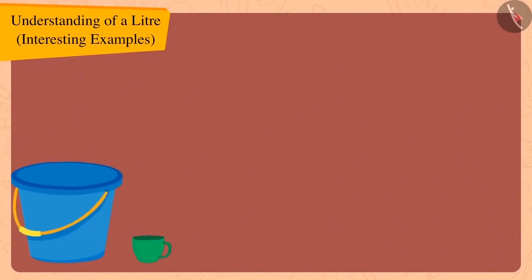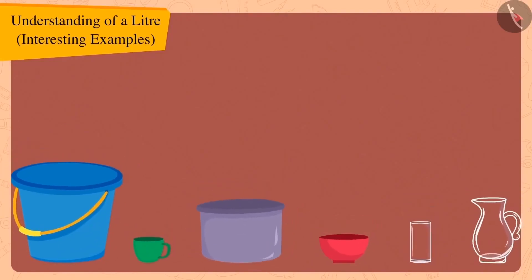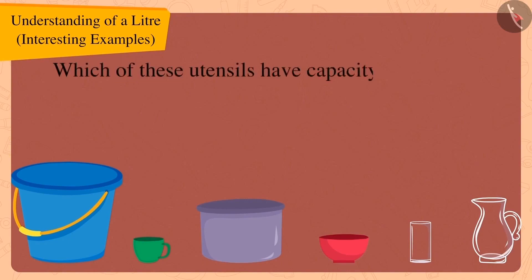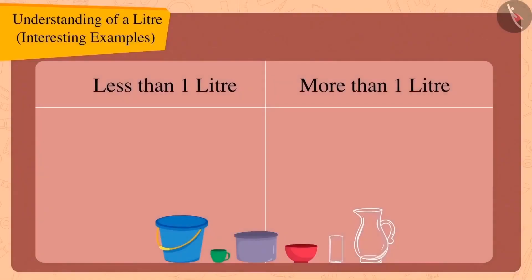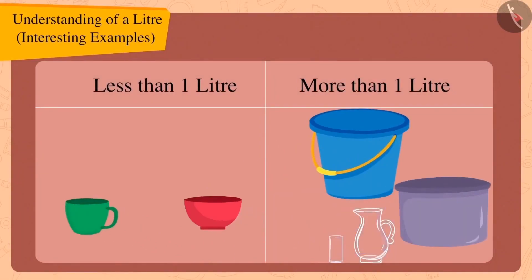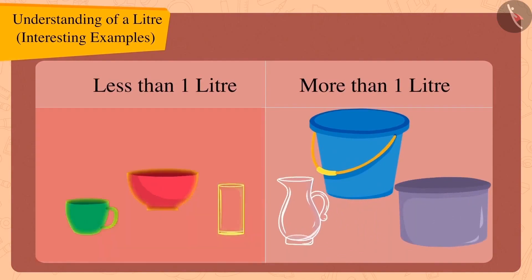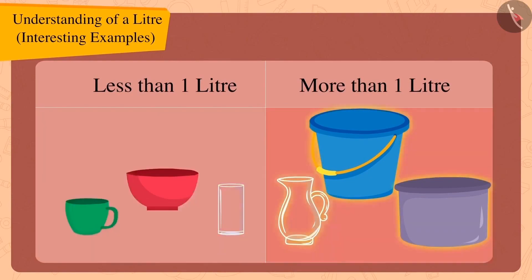Children, here are some utensils Bholla has collected. Can you guess which of these utensils have a capacity less than one litre and which have a capacity more than one litre? If you want, you can stop the video and try to find the answer. Well done, children! The capacity of these utensils is less than one litre and the capacity of these utensils is more than one litre.